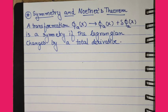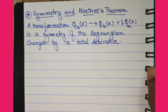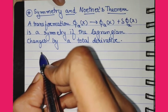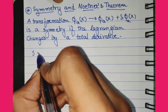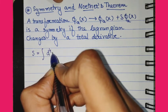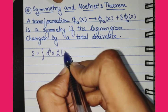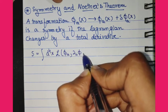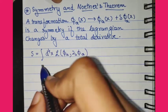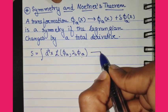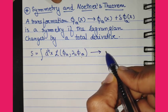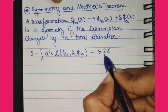In this video we will be discussing symmetry and Noether's theorem from the field theory perspective. In the previous video we saw that the action is denoted by the integral over the Lagrangian density, which is a function of fields and derivatives of the fields. By varying this action we can get the field equations, or the equation of motion of fields.